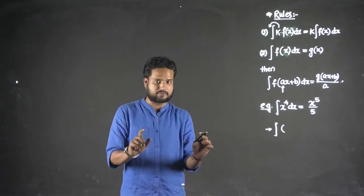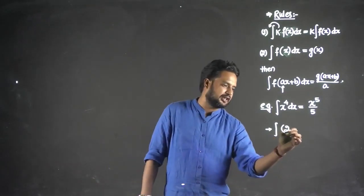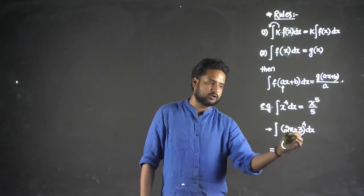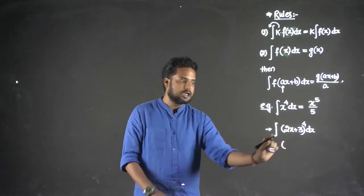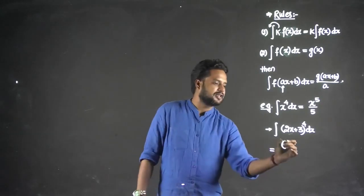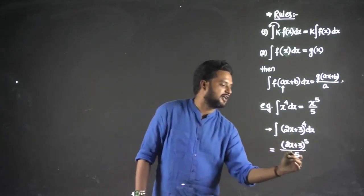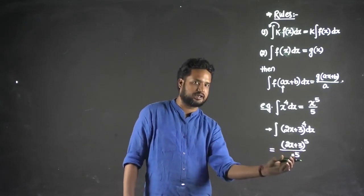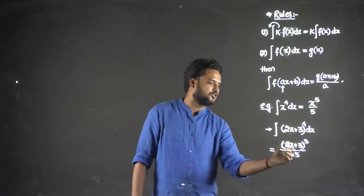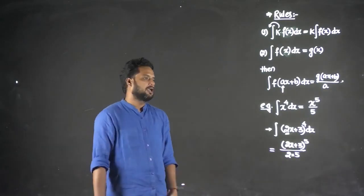But in place of x, if you have a linear combination — for example, (2x + 3)⁴ — its integration will treat (2x + 3) like x, but this must be a linear combination only. x² or sin(x) are not allowed; it has to be in ax + b format. So the integration of (2x + 3)⁴ is (2x + 3)⁵ upon 5, and we also divide by the coefficient of x, which is 2.